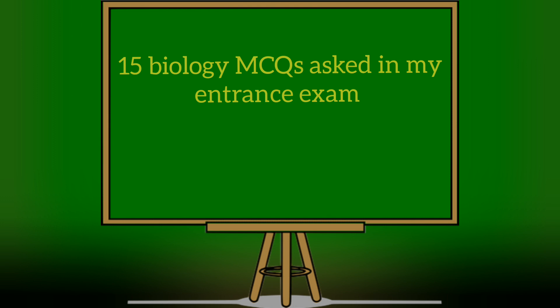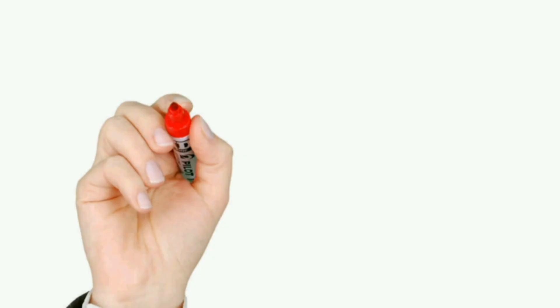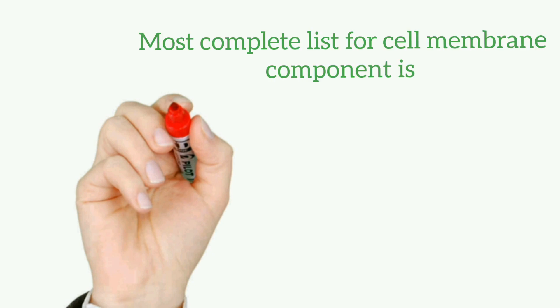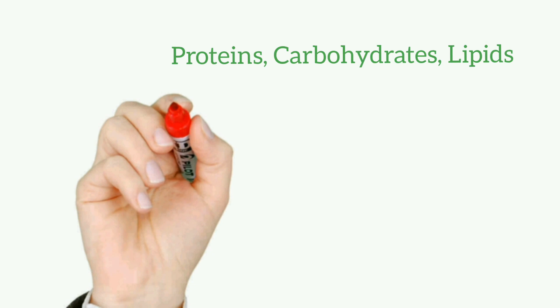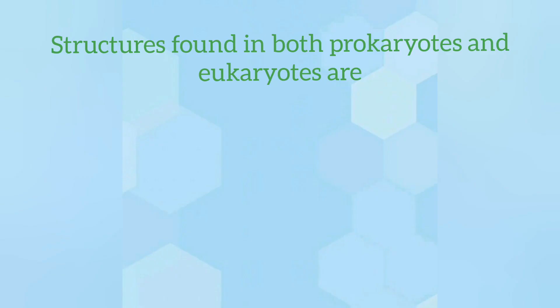The MCQs are as follows. First one: the most complete list for components of cell membrane is, and the answer is lipids, proteins, and carbohydrates. Second MCQ: structures found in both prokaryotes and eukaryotes is, and the answer was cell membrane, DNA, plus ribosomes. Third one: which one does not have cell wall, and the answer was animal cell.